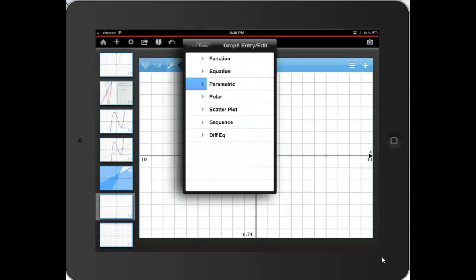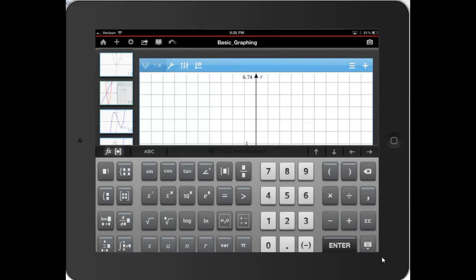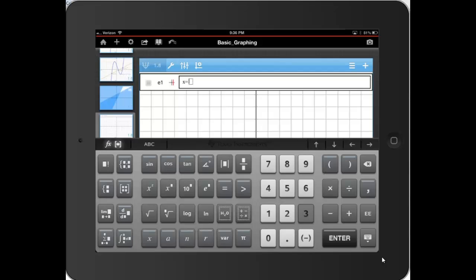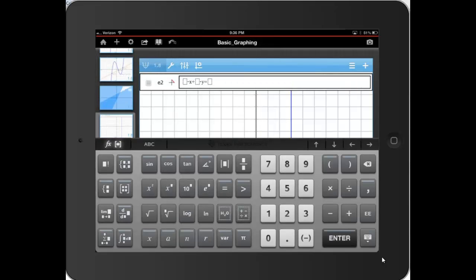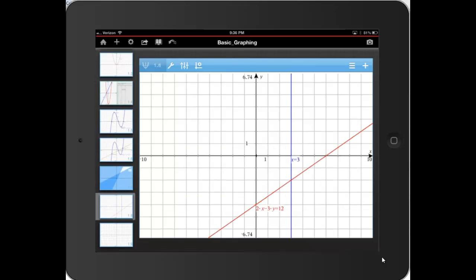We now have linear equation templates. We've got y equals mx plus b, which we've kind of already had. But now we have x equals a constant, so like x equals 3. And also we have standard form. So if I wanted 2x minus 3y equals 12. There it is.